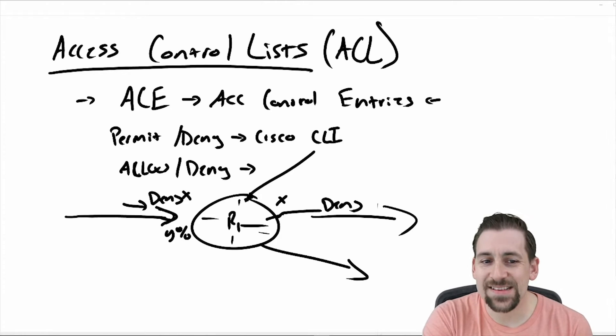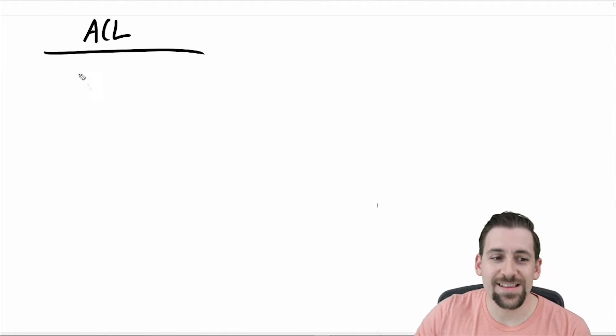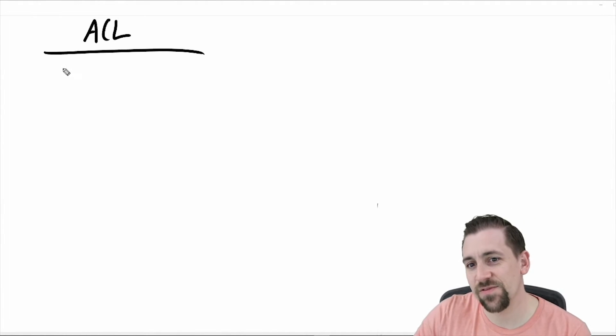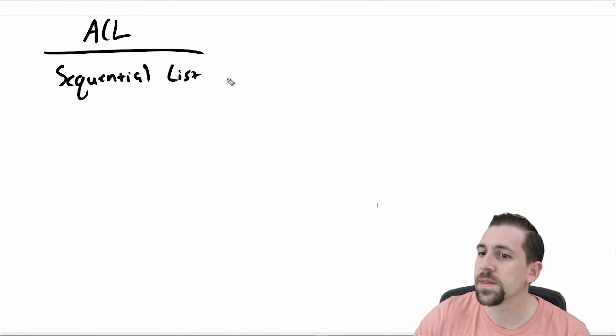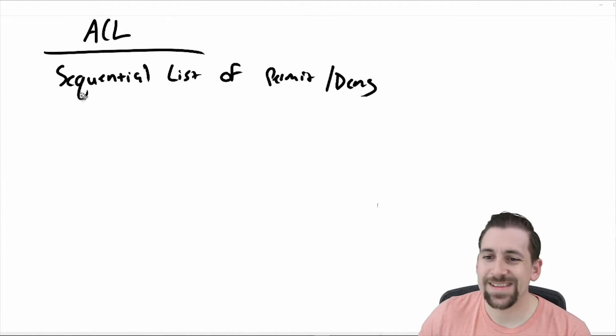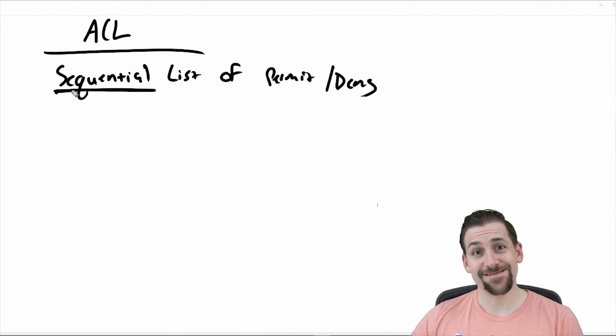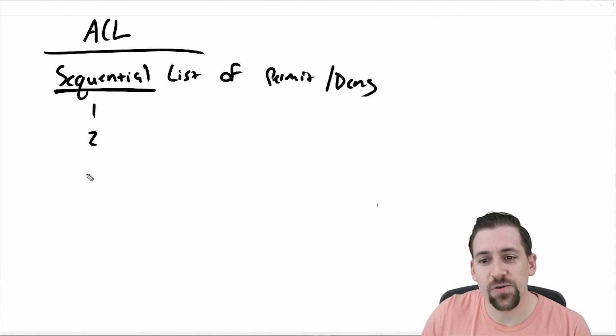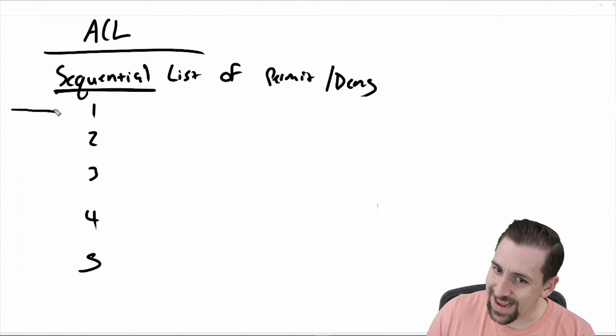So what does an access control list look like then? Well, first of all, these access control lists also have sequentialness. So realistically, if you've actually heard this definition before, it's a sequential list of permit and deny statements. And I always point out that it's actually really important, this term right here, the sequentiality of the list. What does that mean? It means in order: one, two, three, four, five.